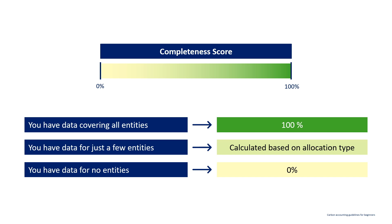How is the completeness score calculated? It depends on the entities listed in the tool, their size, and the data you're entering. If you have three entities and enter full data for all three, your completeness score will be 100% — whether you enter data separately per entity or at global level. If you enter no data, the score will be 0%. If you enter data for just a few entities, the completeness score gets calculated taking into account the size of each entity, defined based on the allocation type. I'll give extra explanation about the allocation type in the next slide.